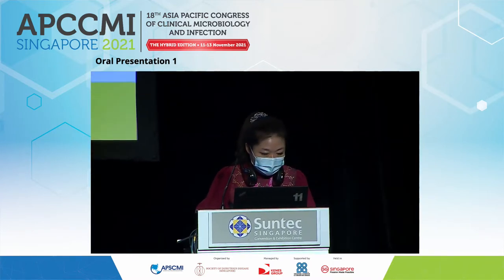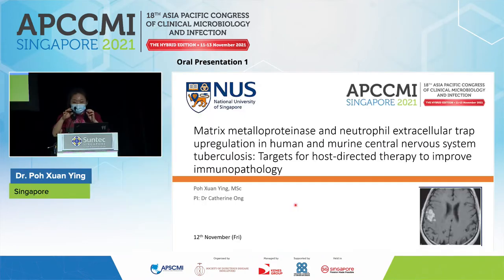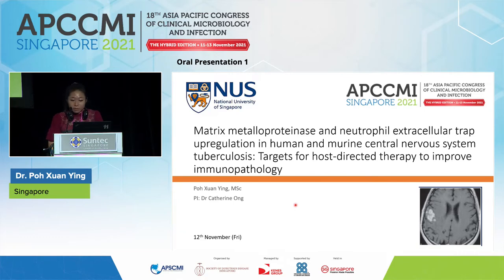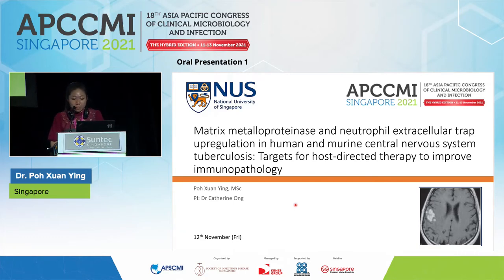Now let's welcome the second presenter, Ms. Po Xien-Ying. She'll be telling us about the role of MMPs and NETs in human and murine central nervous system tuberculosis, looking at targets for host-directed therapy to improve immunopathology. She will be presenting her study investigating the role of the host inflammatory response in CNS TB, focusing on matrix metalloproteinases and neutrophil extracellular traps.